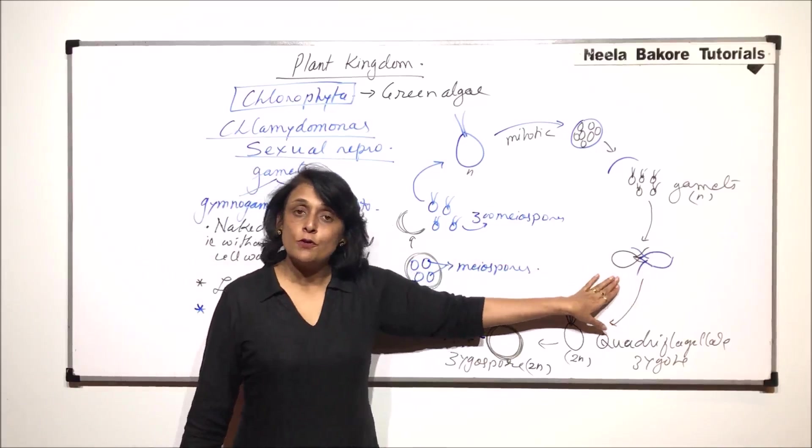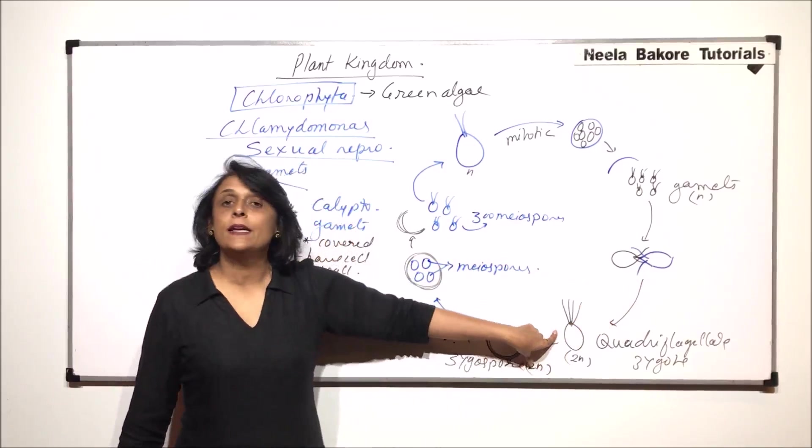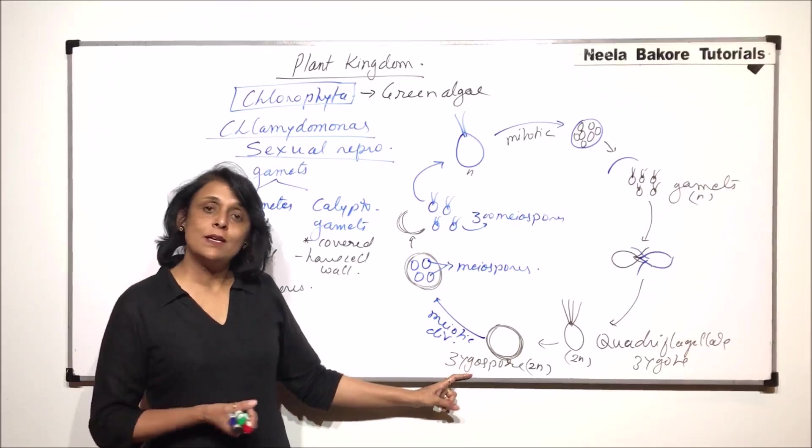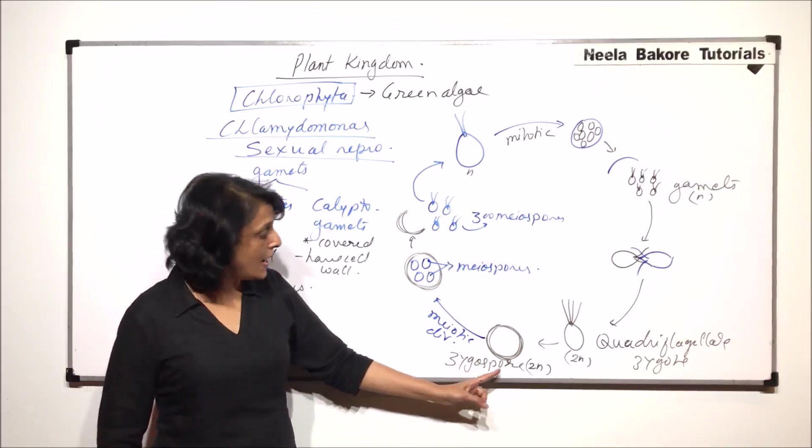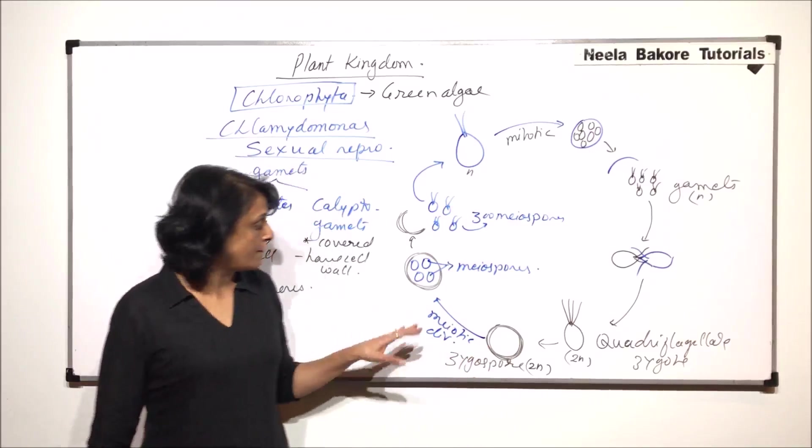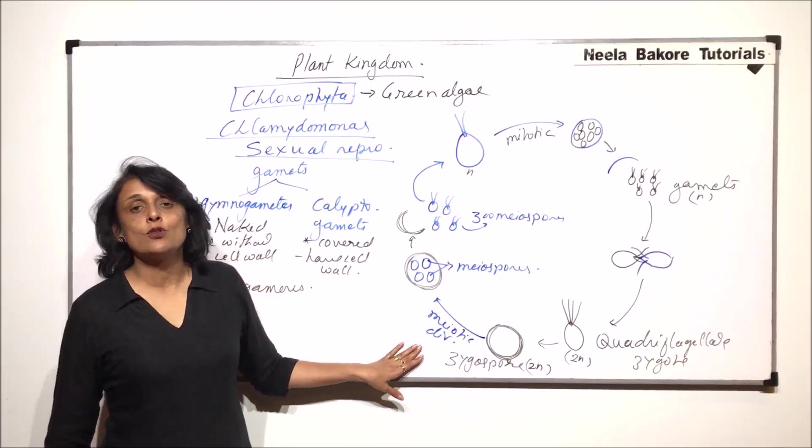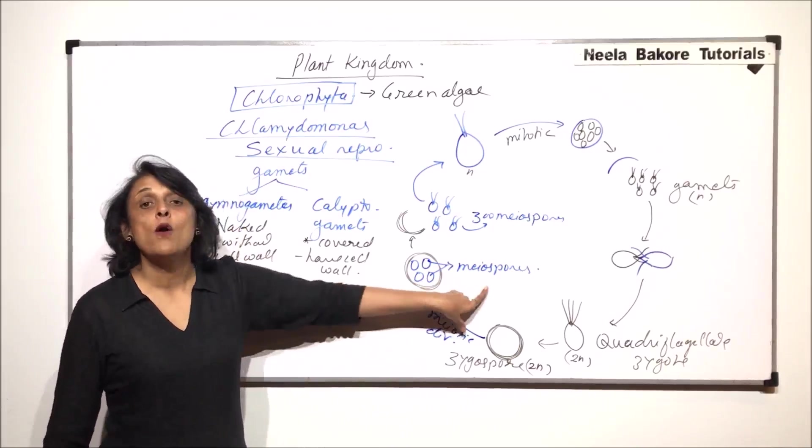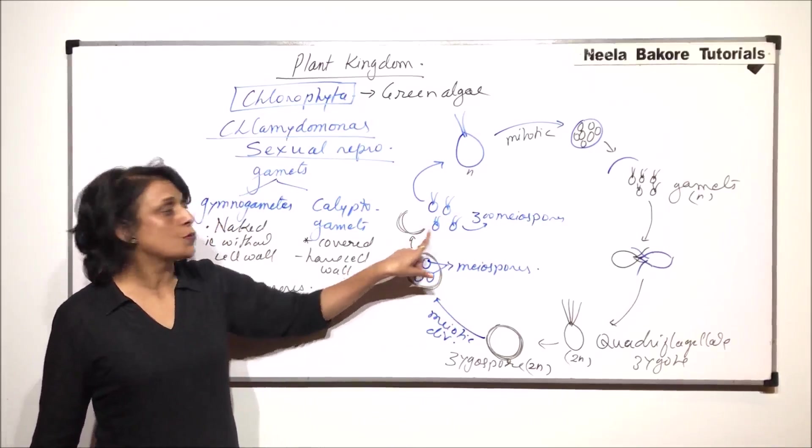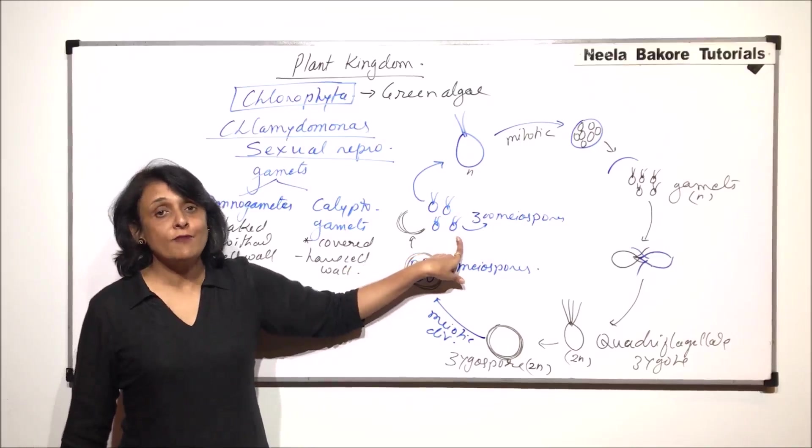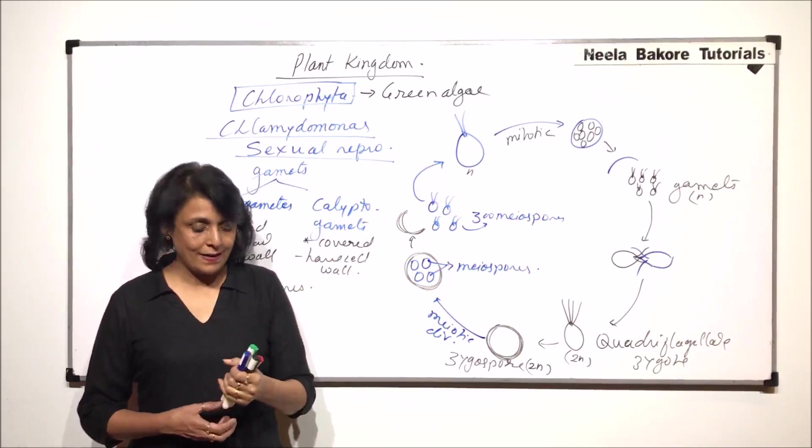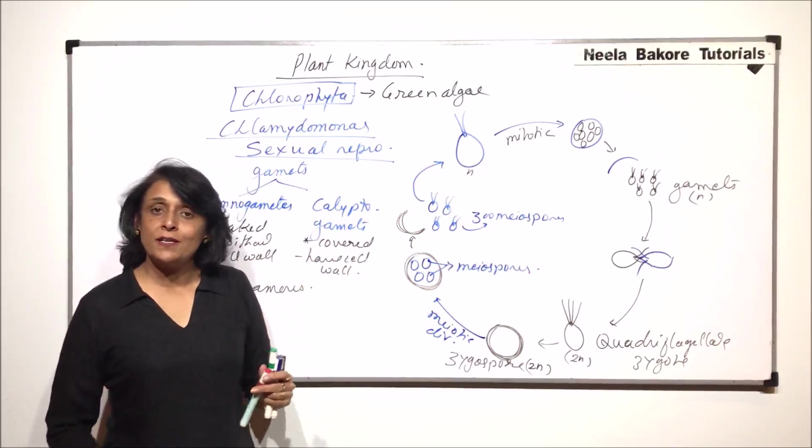Two identical gametes are going to fuse through their anterior end resulting in formation of a quadriflagellate zygote. Zygote immediately is going to lose all four flagella and will become non-motile. We will start calling it zygospore. It secretes a thick wall around itself. Then, the zygospore undergoes a meiotic division to form four meiospores which, after rupturing of the zygospore are released. Because they have flagella, we start calling them zoomeiospores. These zoomeiospores will again start leading their life as haploid Chlamydomonas.